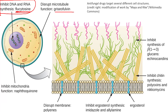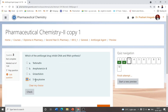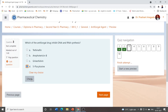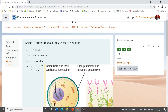Griseofulvin acts by disturbing microtubule functions. Imidazoles and allylamine derivatives act by inhibition of ergosterol synthesis. Flucytosine acts by inhibition of DNA and RNA synthesis. So the correct answer is flucytosine — inhibition of DNA and RNA synthesis.